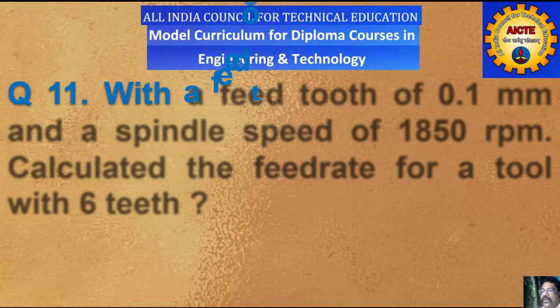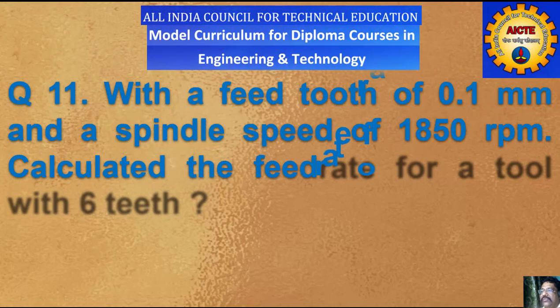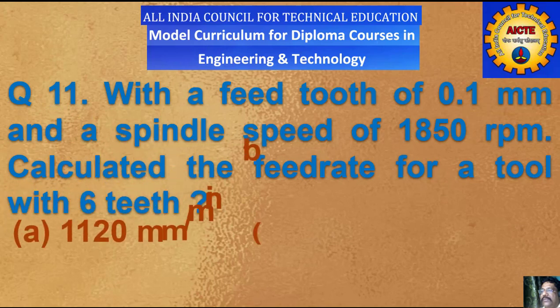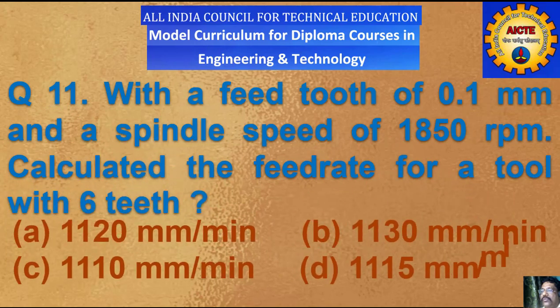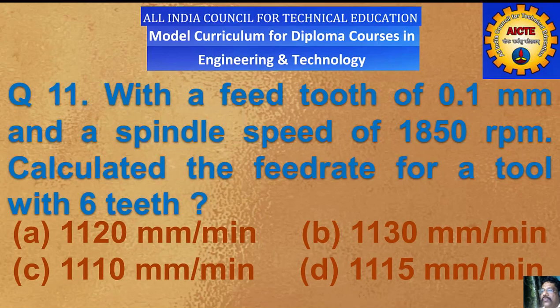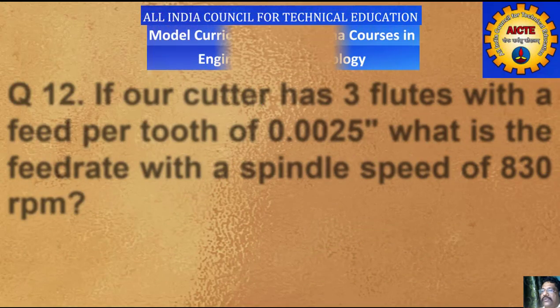Question number 11: with a feed per tooth of 0.1 mm and a spindle speed of 1850 rpm, calculate the feed rate for a tool with 6 teeth. A) 1120 mm per minute, B) 1130 mm per minute, C) 1110 mm per minute, D) 1150 mm per minute.